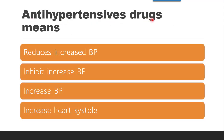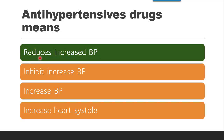The next question is: antihypertensive drugs mean what? Anti to hypertension — hypertension is increased blood pressure, so anti to it means to lower BP. The options are: reduce the increased BP — yes, possible; inhibit the increased BP — no, not a proper term; increase the BP — no; increase heart systole — no. So the correct answer is reduces the increased BP. The antihypertensive mechanism is to reduce elevated blood pressure.